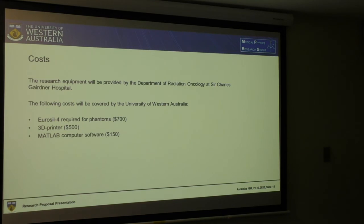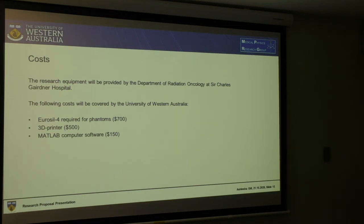Regarding costs, Sir Charles Gairdner Hospital will provide all the research equipment. Other costs — Urasil at $700, the 3D printer at $500, and MATLAB at $150 — will be provided by the University of Western Australia.